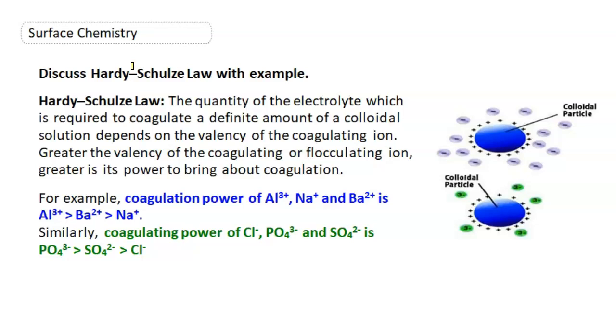But by somehow if they lose their charge, what will happen? They will coagulate, or that means they will form aggregates and precipitate. This precipitation or coagulation can be carried out by adding an electrolyte to a solution.